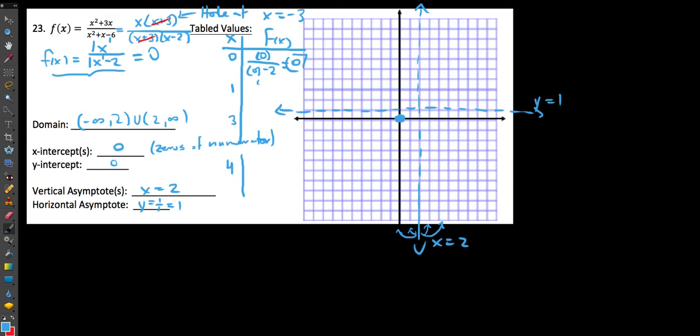Looking at 1 here, we would get 1 over 1 minus 2. We would get really 1 over negative 1 or negative 1. Here we get 3 over 3 minus 2, so 3 over 3 minus 2 would be 3 over 1, which is 3. And then 4, we would get 4 over 4 minus 2. We plug this in and we get 4 over 2, which when we box it here is a 2.